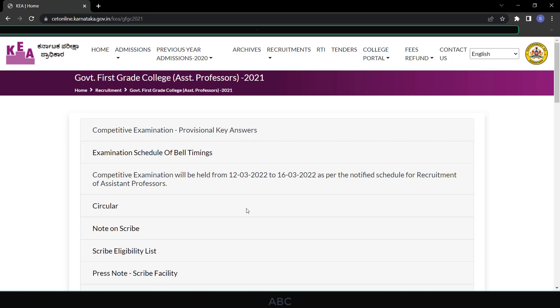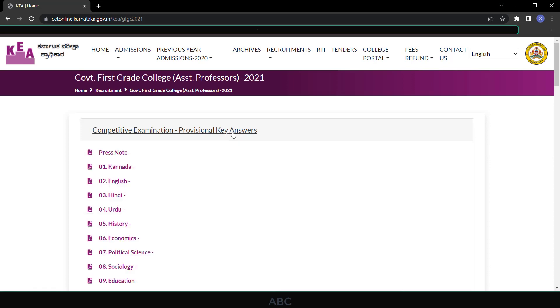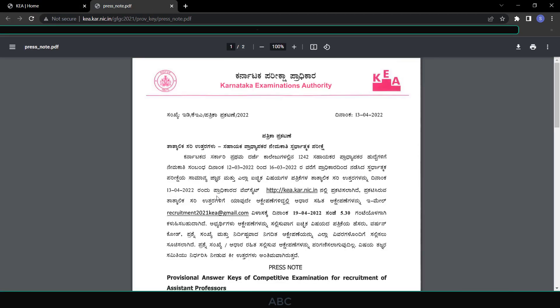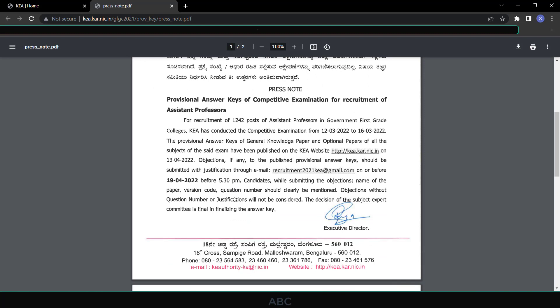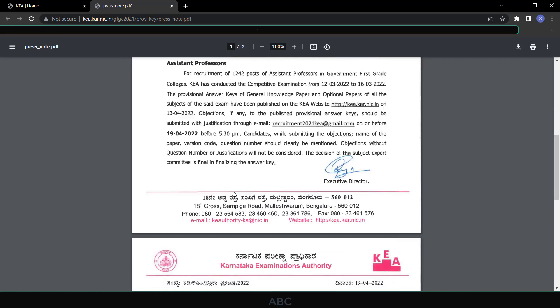Hello everyone, as we all know, KEA has released the provisional key answers along with the press note and informed that we can raise our objections before 5:30 PM of 19th April. They have given an email ID recruitment2021kea@gmail.com to which we can write our objections along with justification. They have also given instructions on how to apply for these objections in this table.